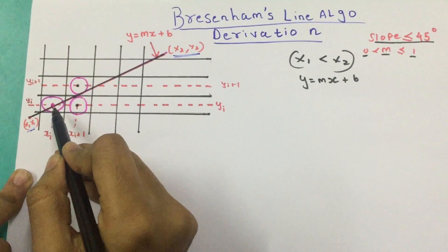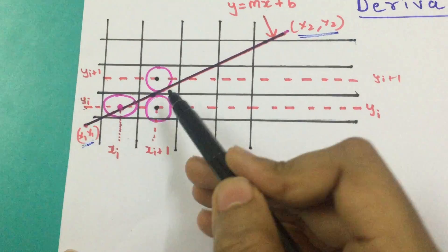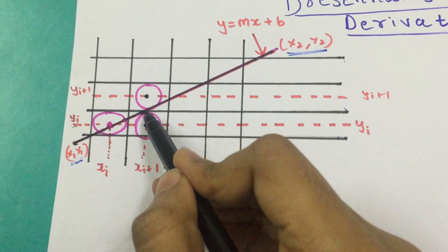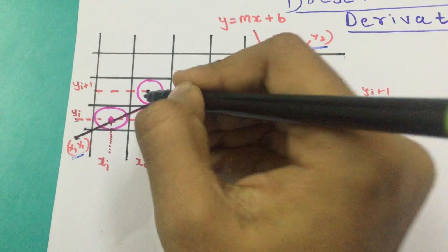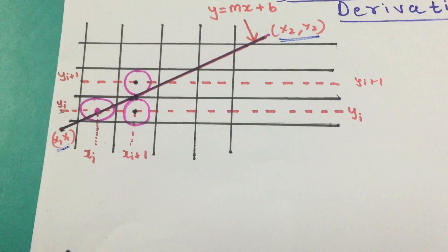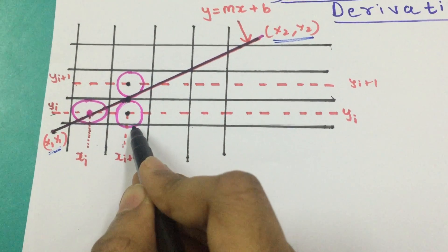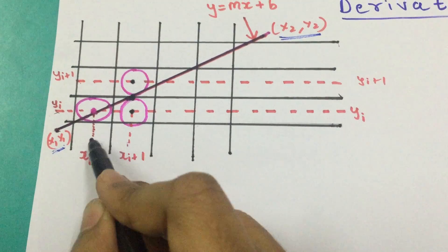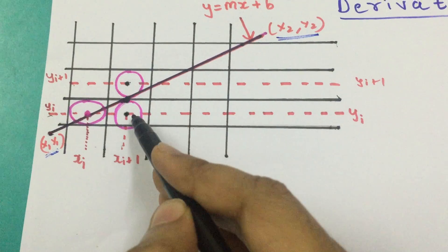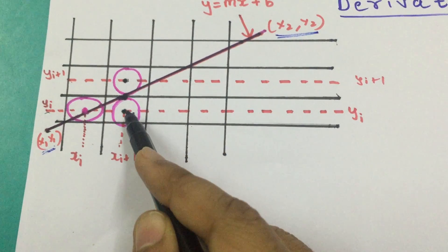We've already plotted a pixel at xi, yi, and we have to plot the next pixel of the line. Our line is going like this, and here is going to be our y-coordinate. However, we have to find the closest pixel for this y-coordinate. We've already obtained the next x-coordinate as xi plus 1, but now we have to decide which y-coordinate to select — do we select yi plus 1, or do we select yi?